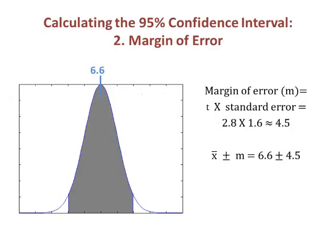Here we multiply the t of 2.8 and the standard error of 1.6 together to get a margin of error of 4.5. We can now say that our estimate of the population mean is 6.6, with a margin of error of plus or minus 4.5.